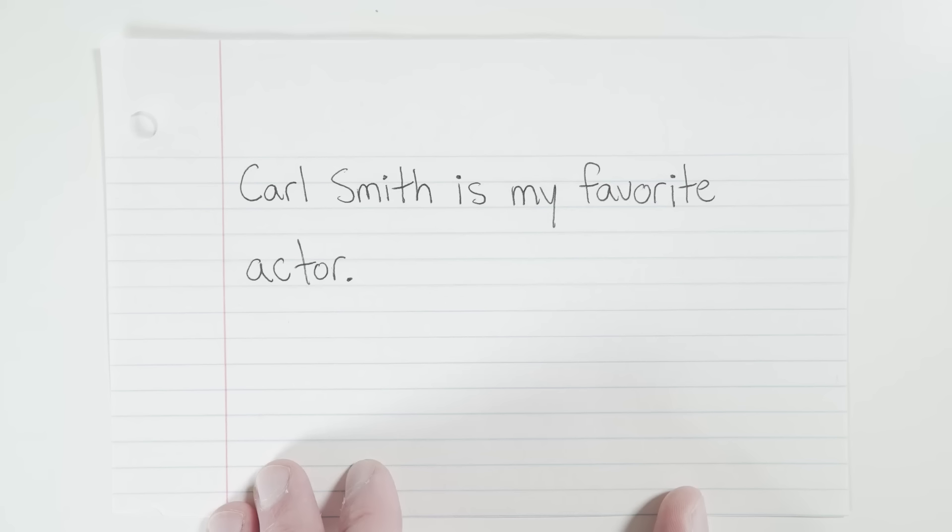Next one. Carl Smith is my favorite actor. Okay, so what do you think here? Remember, to be a complete sentence, you must have a subject and a predicate, and you must express a complete thought. If you're missing one of those things, it's a fragment. And if you have too many of those things without the right punctuation, you have a run-on. So, what is this?